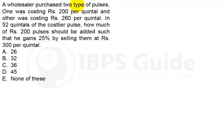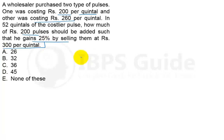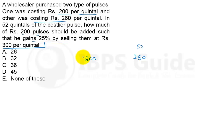Question number 4: A wholesaler purchased two types of pulses — one costing rupees 200 per quintal and the other costing rupees 260 per quintal. The costlier one is the 260 per quintal pulse. 52 quintals of the costlier pulse is available. How much of the 200 rupees per quintal pulse should be added such that he gains 25% by selling them at rupees 300 per quintal?